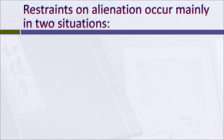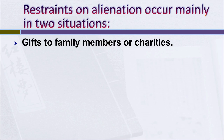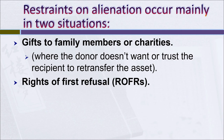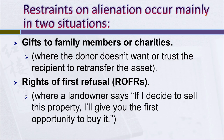Restraints on alienation occur in two situations in the United States. The first is with gifts to family members or to charities, where the owner doesn't want the recipient to retransfer the property, or doesn't trust the recipient to make a sound retransfer. The second situation is the right of first refusal, where a landowner says: if I decide to sell this property, I'll give you the first opportunity to buy it. Courts regard rights of first refusal as restraints on alienation and might strike them down.